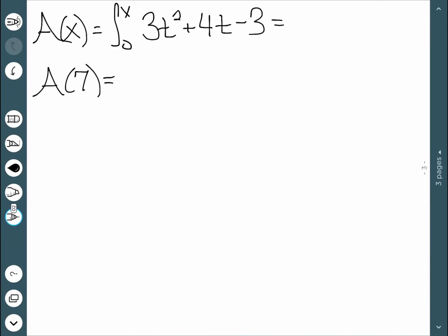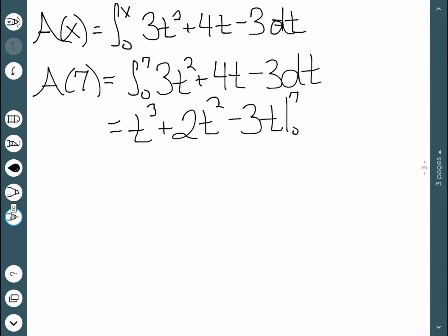For our next example, we have the same function. However, this time we want to find A of 7. So I'm going to integrate between 0 and 7 of 3t squared plus 4t minus 3dt. Our initial integration works the same way. We still get t cubed plus 2t squared minus 3t. The only difference is our bounds. This time we're going between 0 and 7.